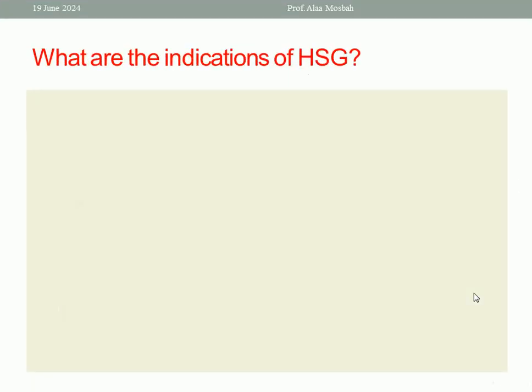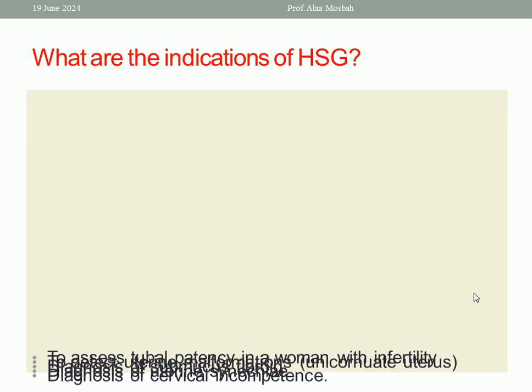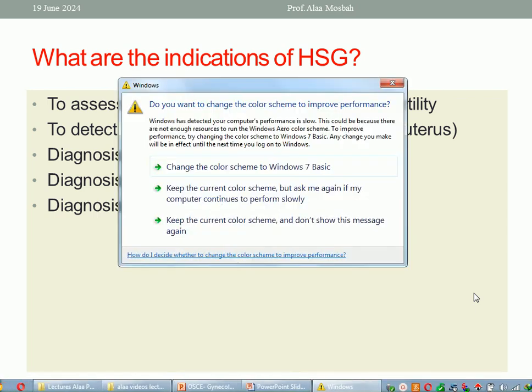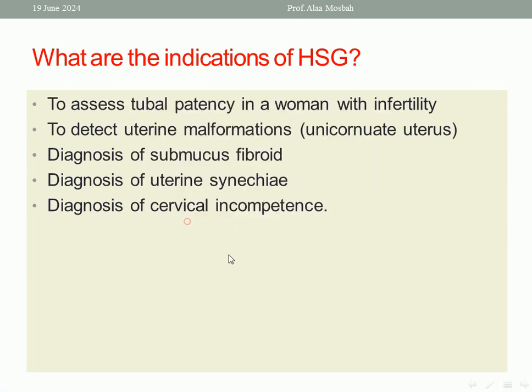What are the indications of Hysterosalpingogram? One indication is to test for tubal patency in women with infertility. Another indication is to detect uterine malformations — for example, unicornuate uterus, bicornuate uterus, or septate uterus.